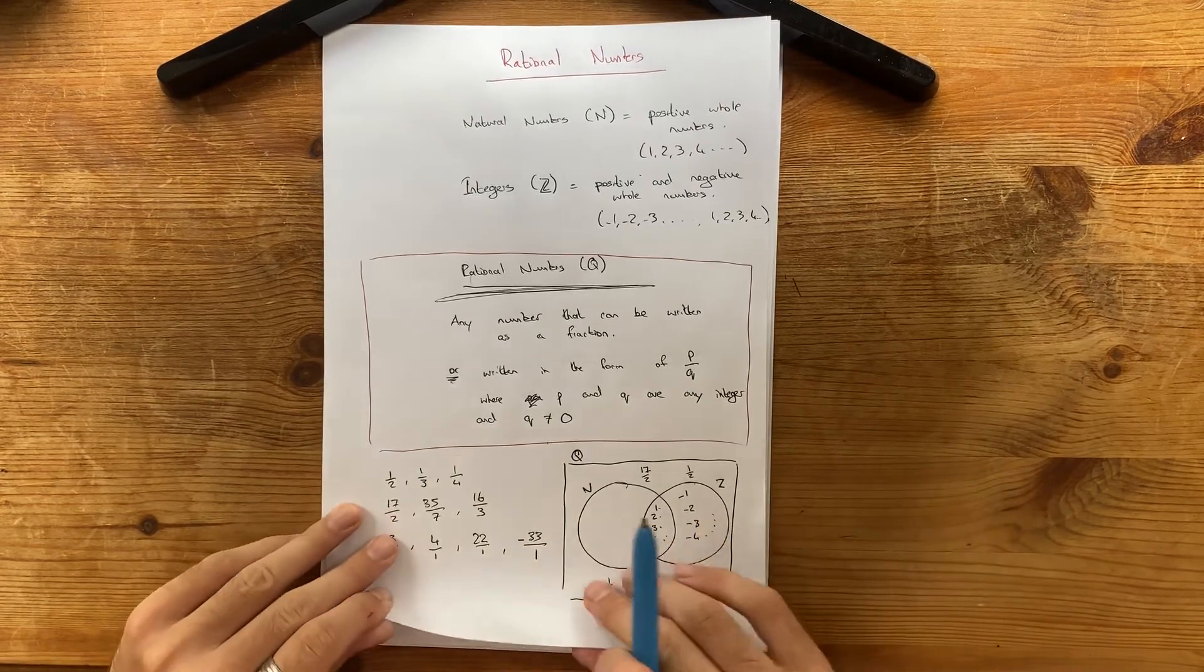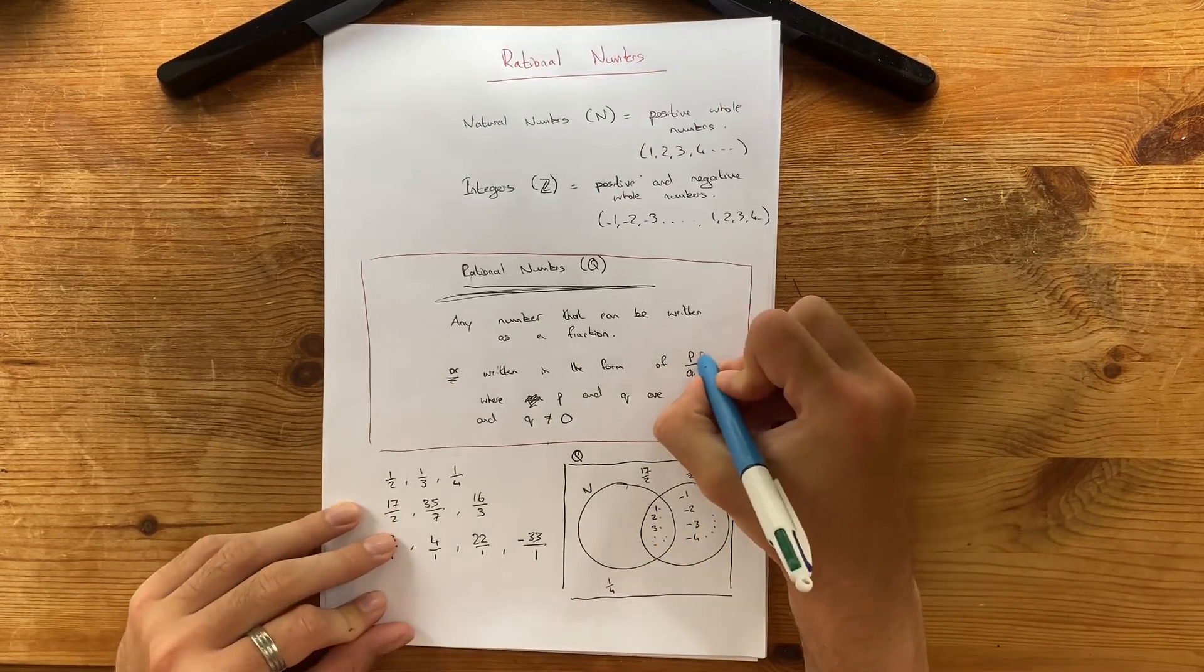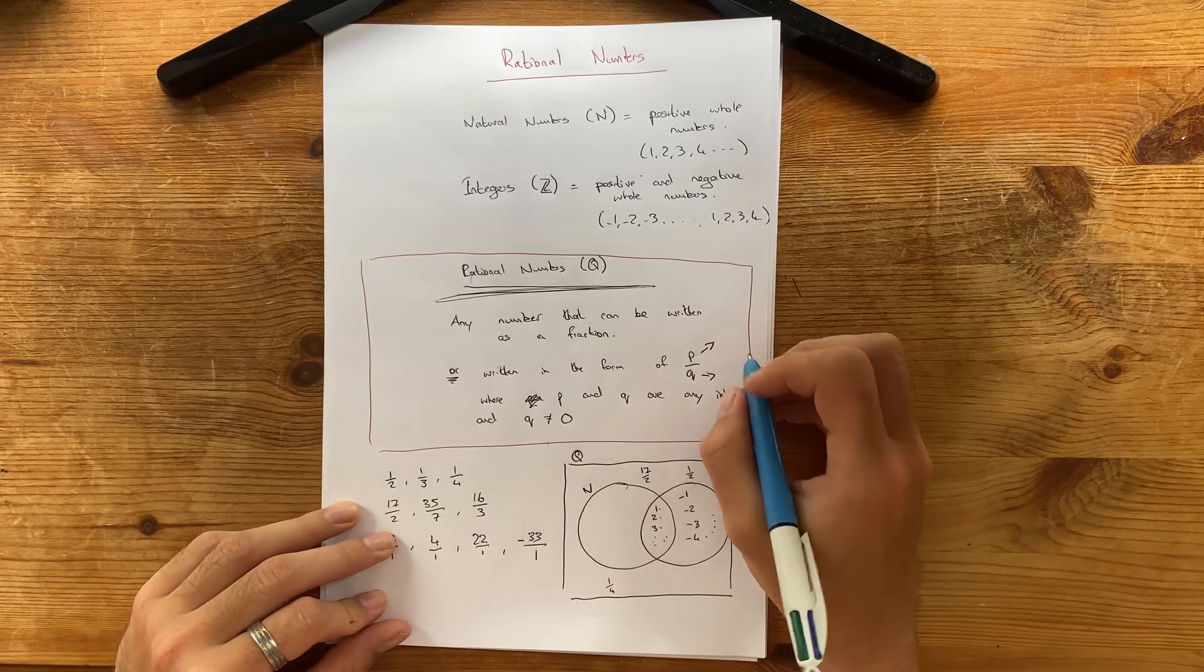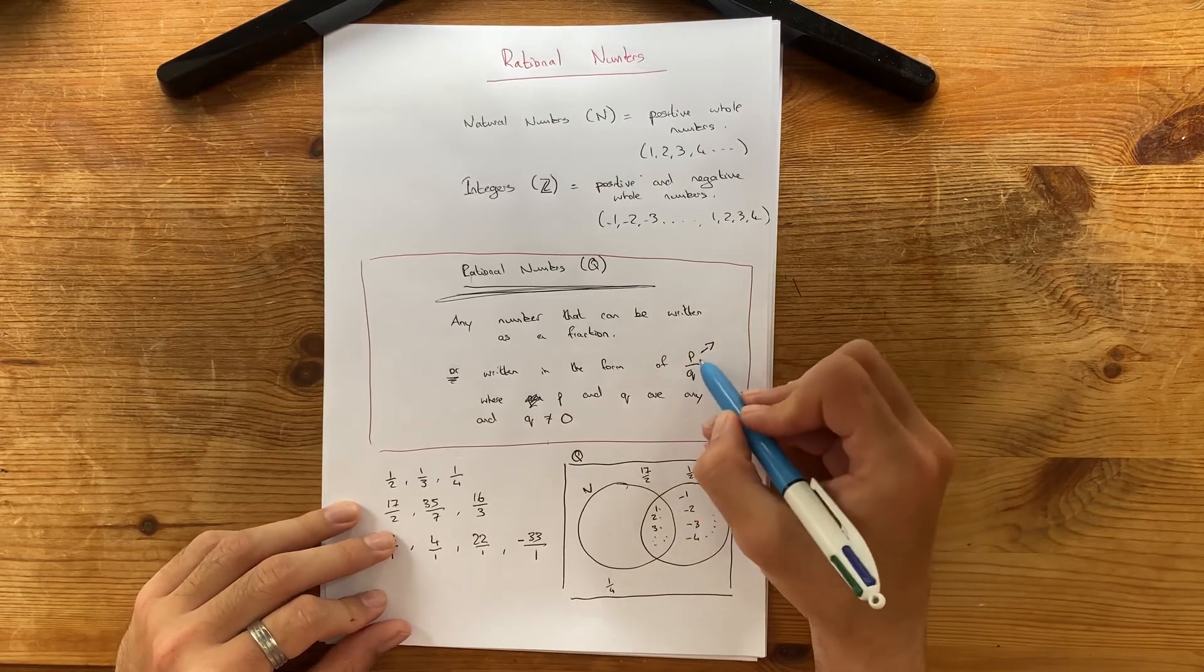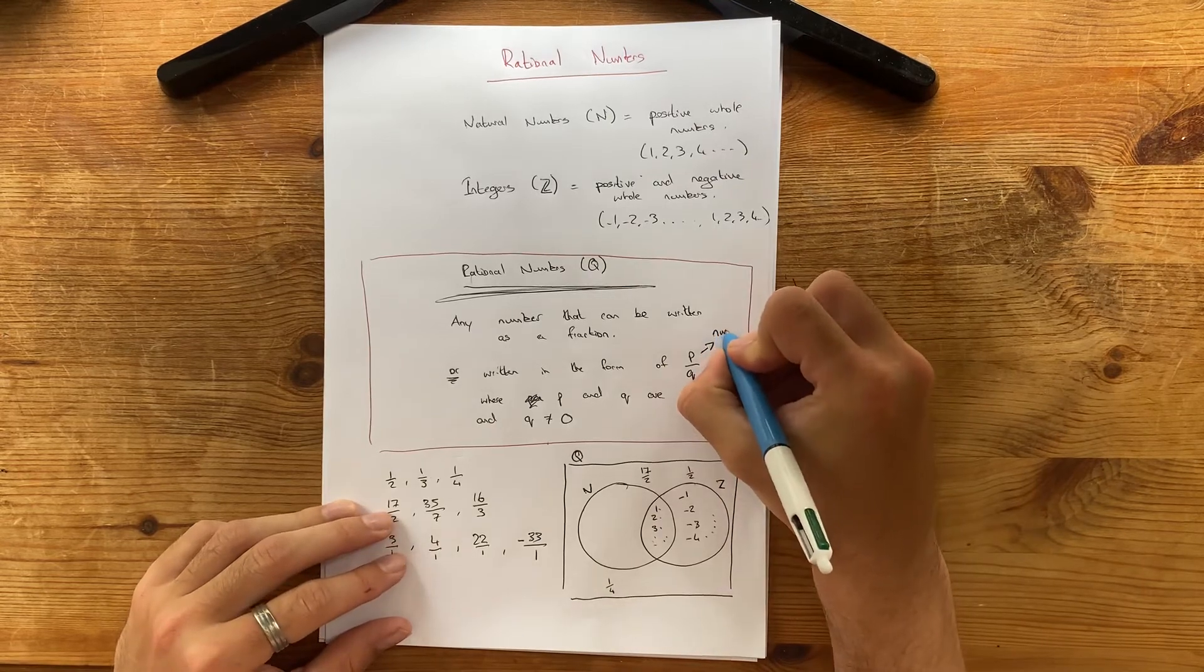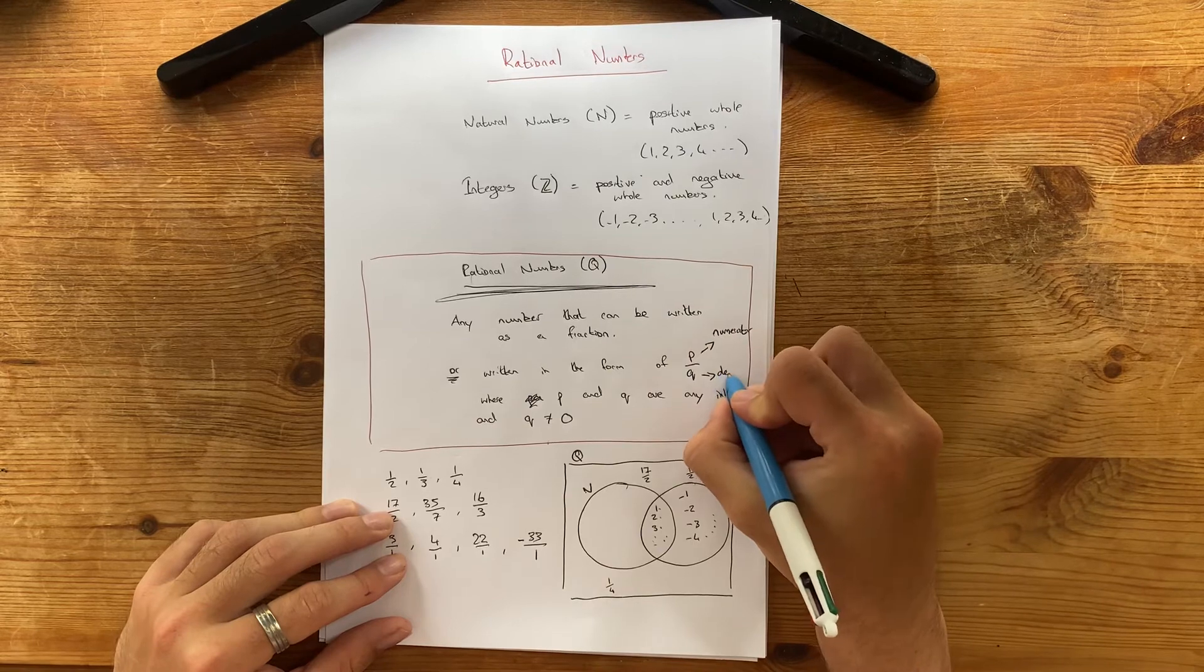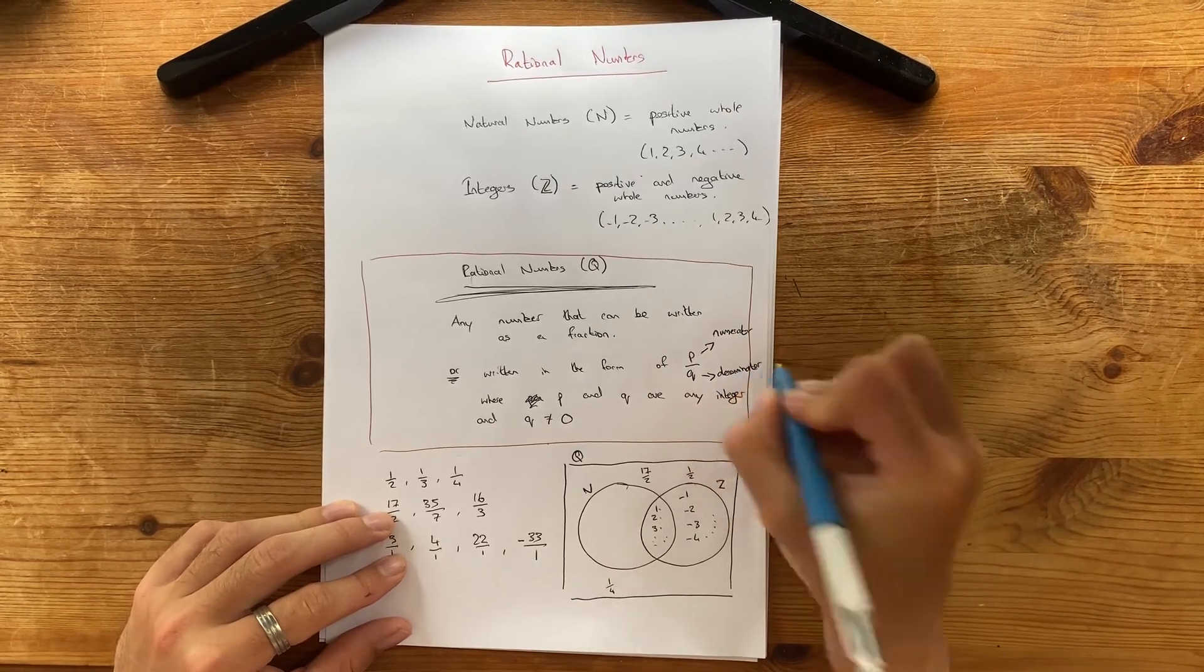So, another quick, just additional bit. You probably remember this from primary school. But P, up here, is called the numerator. And the bottom one is called the denominator.